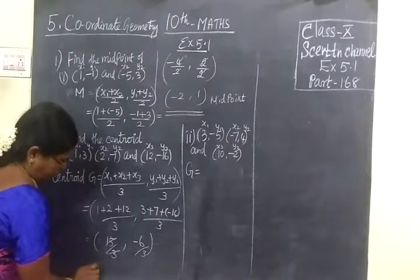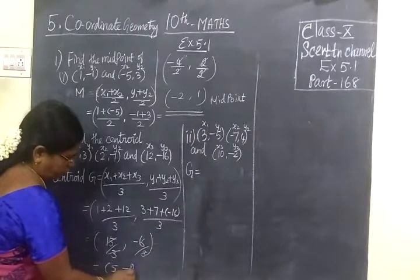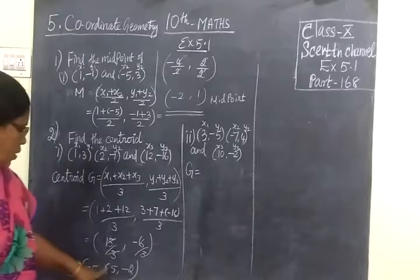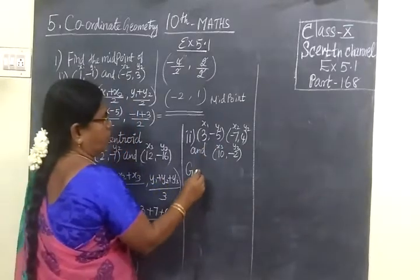So if you cancel, the answer is 5 comma minus 2. This is the centroid. Centroid answer is 5 comma minus 2.